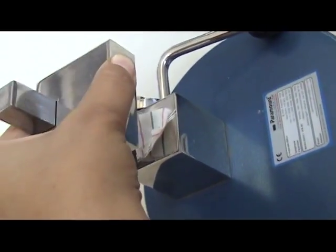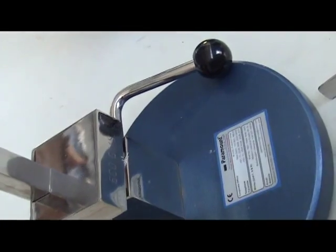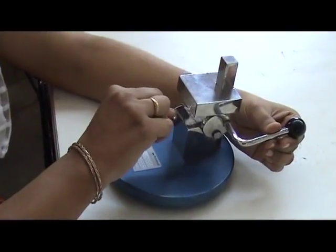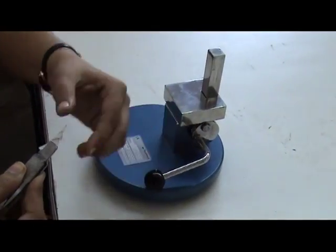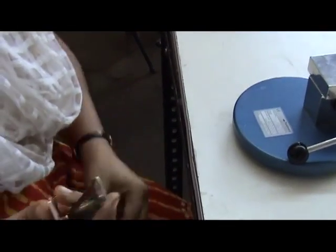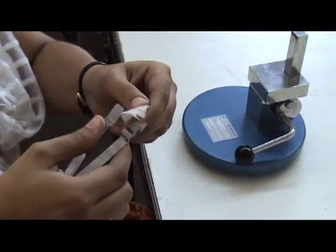Under a load of 2 kilograms for one minute, the weight is removed and the sample is placed with the help of forceps in the clamp with half of the sample hanging vertically downwards. As the recovery takes place, the